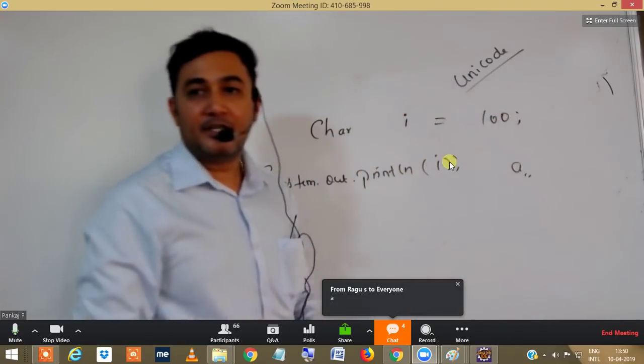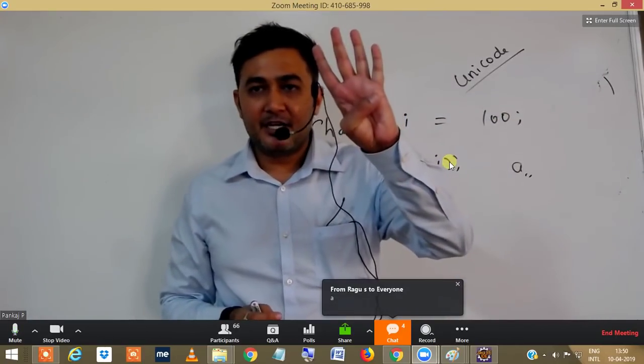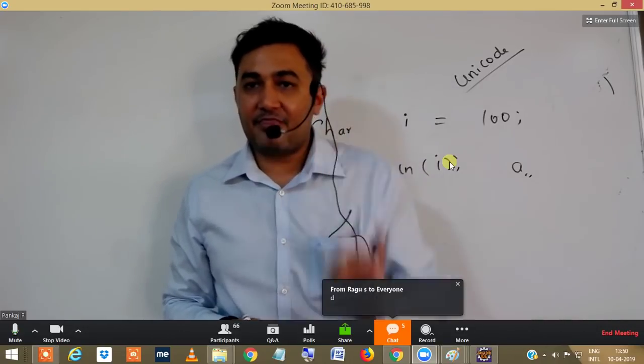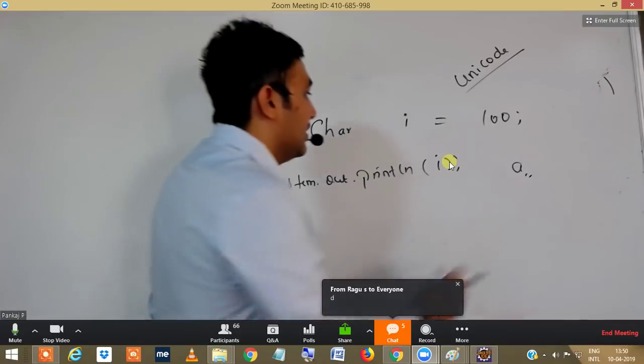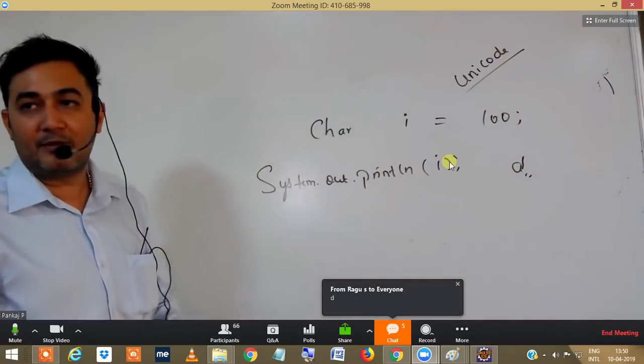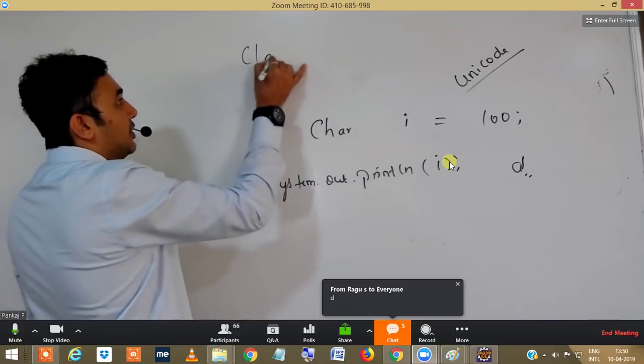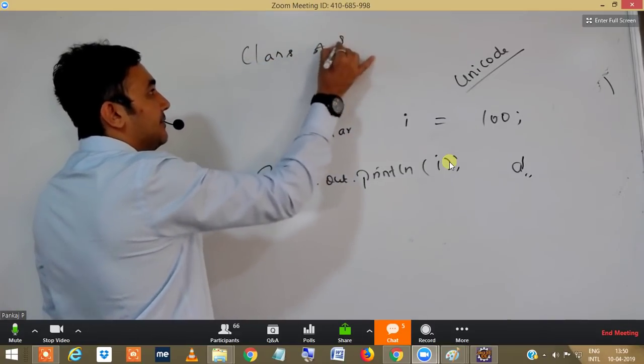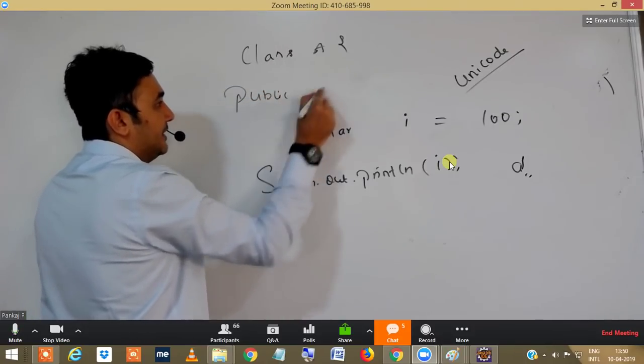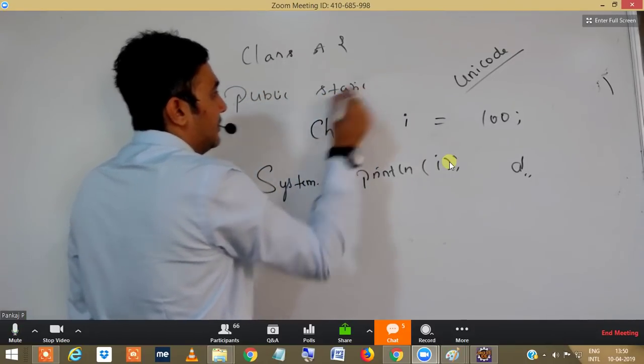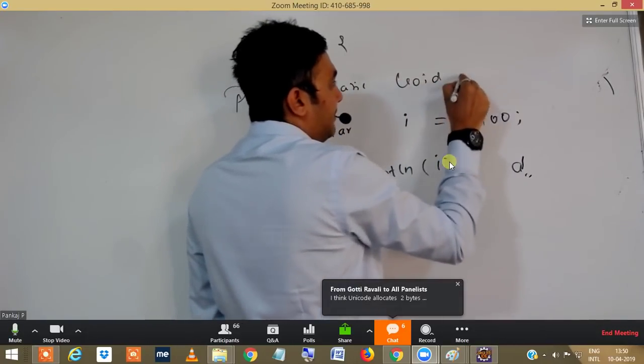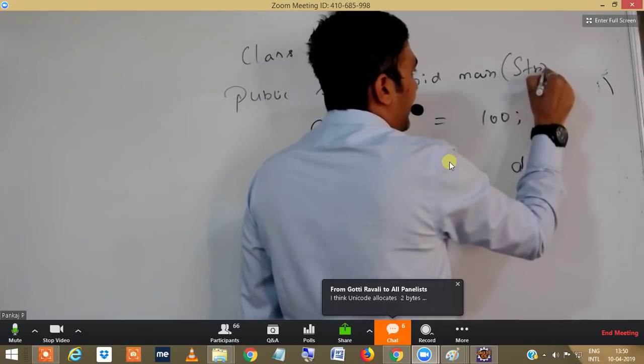The same way, if I'm storing 100, what would happen? 97 is A, 98 is B, 99 is C, and then 100, which means this would be printing D. Of course, the program is incomplete because we require a class. Let's write down public static void main String...